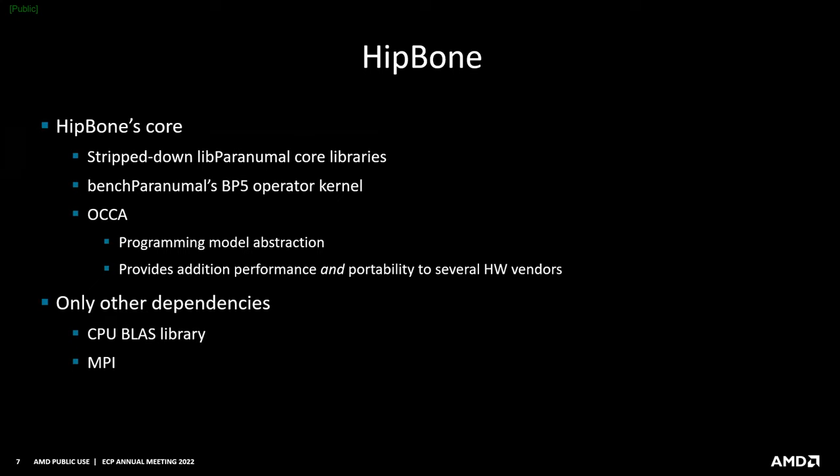Thankfully, thanks to the CEED co-design center, we had a lot of research and development effort to leverage from many researchers and developers across several institutions. NekBone's computation is very similar to bake-off problem number five — the diffusion kernel where the quadrature order is the same as your Lagrange interpolation basis. So we could essentially start from several BP5 implementations and work from there. We picked Bench Paranormal as the BP5 implementation to start from and work our way towards optimizing for AMD hardware.